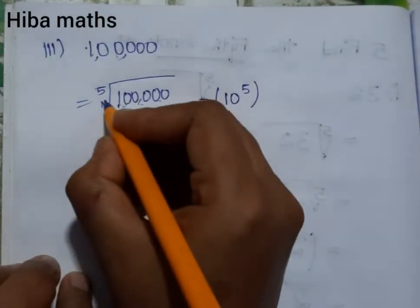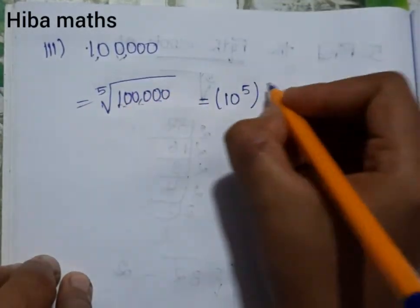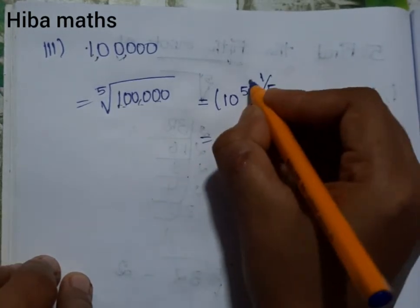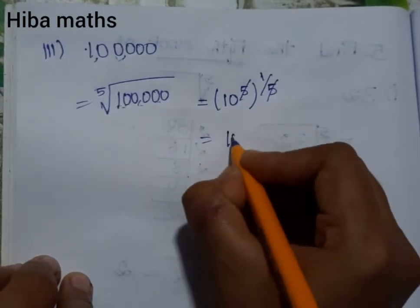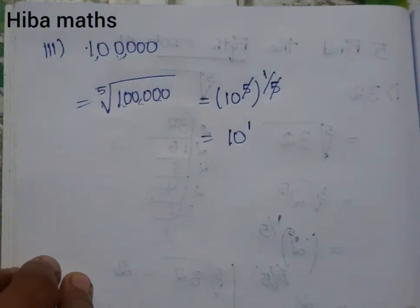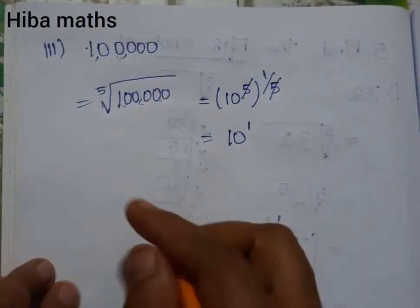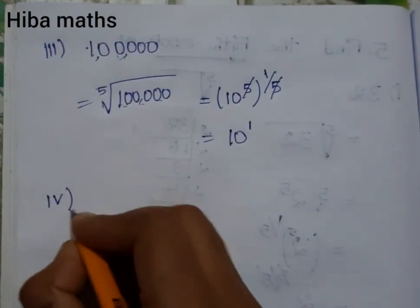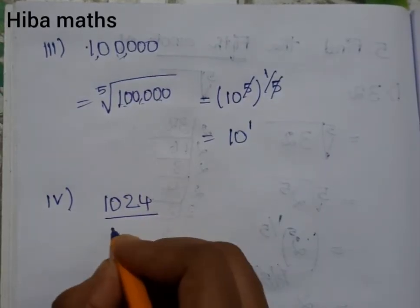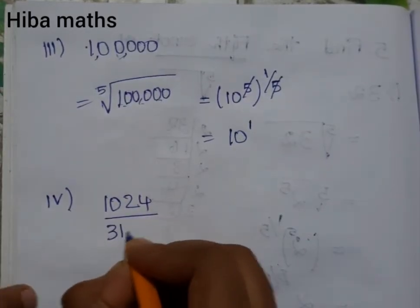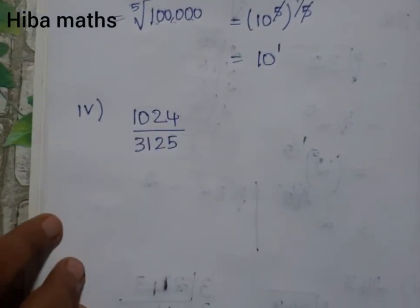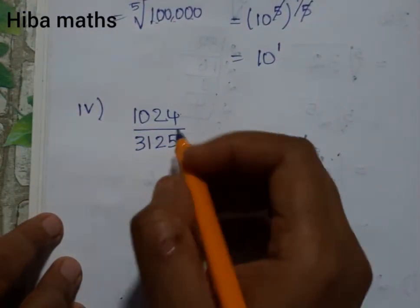So now, 10 to the power 5. The 5th root of that is 1 by 5, so you can cancel: 10 to the power 1, and you can get 10 to the power 4. That gives us 10,240 divided by 3125.